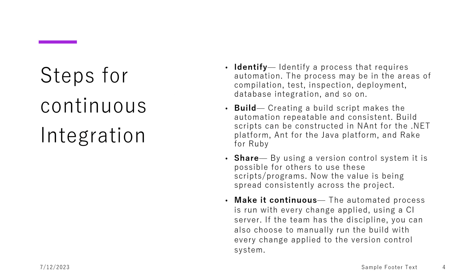What are the typical steps when we talk about continuous integration? It seems simple — just about checking in code — but it is not. It is a methodical process where discipline is needed from each and every developer or the team as a whole to achieve continuous integration or DevOps successfully. The first step is to identify: we need to identify processes that will require automation. This can be in any area — compilation, testing, inspection, deployment, database integration, and so on. So the first step is to identify what different processes need to be automated.